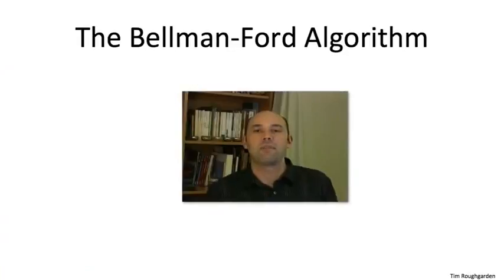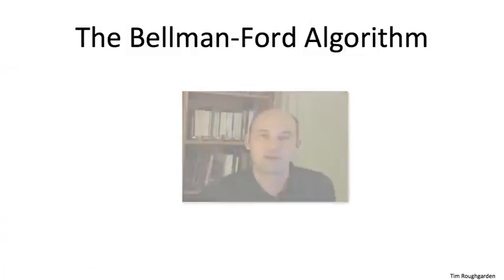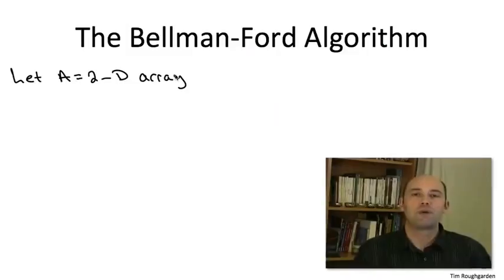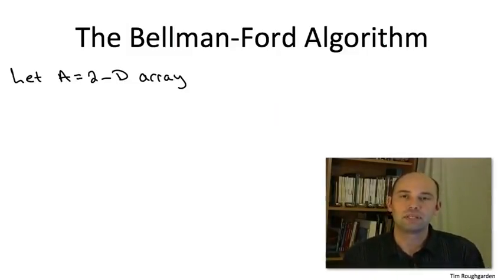So now it's a simple matter to write out the pseudocode of the justifiably famous Bellman-Ford algorithm. Because our subproblems are indexed by two parameters, the edge budget I and the destination V, we're going to have a two-dimensional array A.